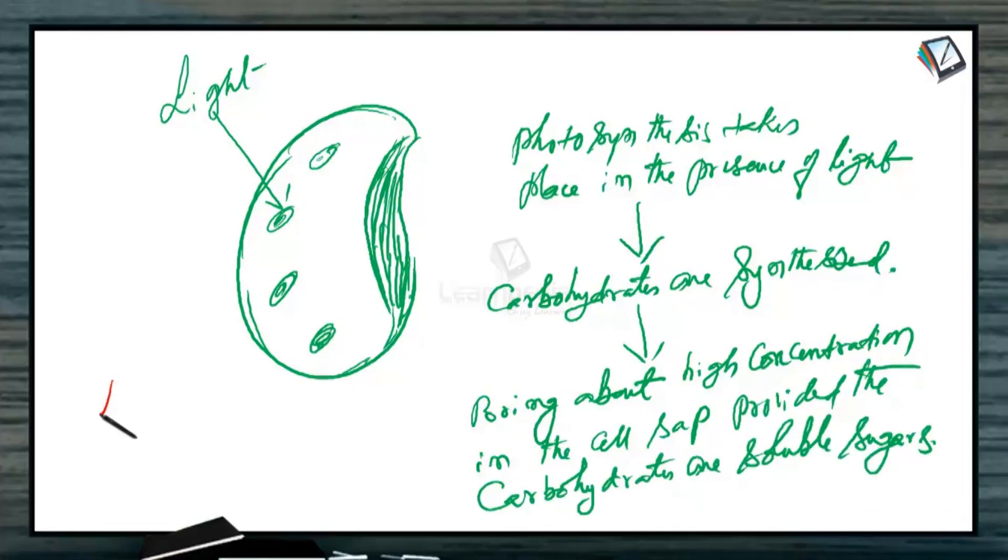Does this explanation hold good? Let us examine the different possibilities by which the guard cells become turgid. That is, they should become hypertonic and endosmosis should take place. Then, the guard cells should expand. Let us see the possibilities one by one.